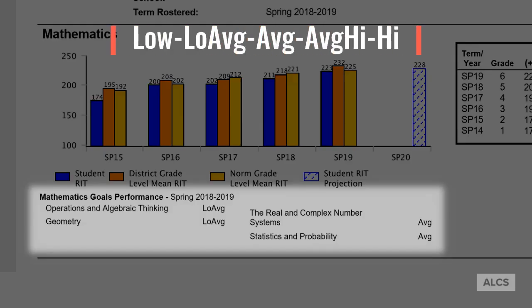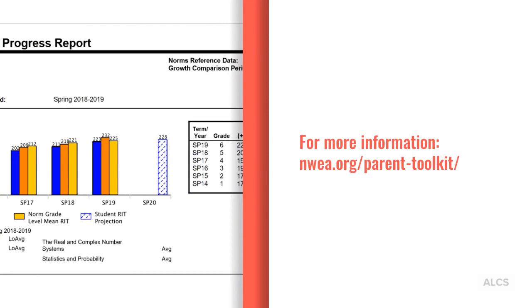Looking at this student summary, we can see that the student's performance overall was between slightly below average and average. Keep in mind that the MAP test, like any other test, is one of many different methods to measure a student's academic progress and competence, and should be considered alongside other forms of assessment, such as STAR tests and classroom performance, to provide the most accurate, big picture view of a student's academic growth over time.